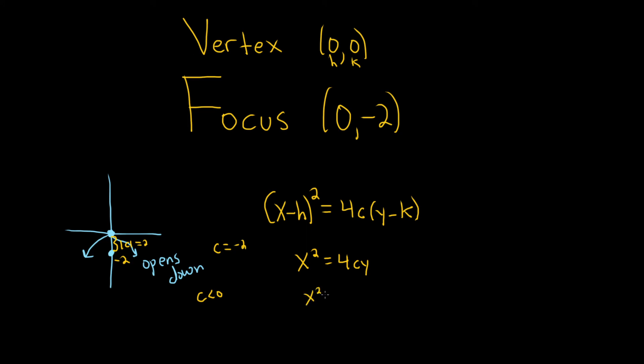So x squared is equal to 4 times negative 2 times y. That gives us x squared equals negative 8y. And that would be the equation of the parabola.